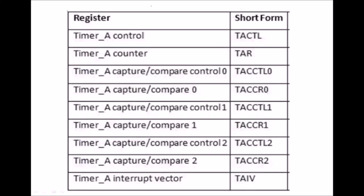The registers associated with Timer A are: the Timer A control register (TACTL), the Timer A counter register (TAR) initialized with 0x00, Timer A capture-compare control 0 register (TACCTL0), Timer A capture-compare 0 (TACCR0), Timer A capture-compare control 1 (TACCTL1), Timer A capture-compare 1 (TACCR1), Timer A capture-compare control 2 (TACCTL2), Timer A capture-compare 2 (TACCR2), and the Timer A interrupt vector register (TAIV).